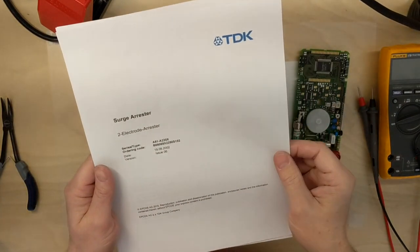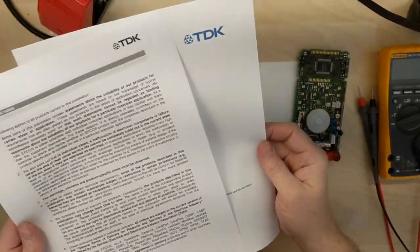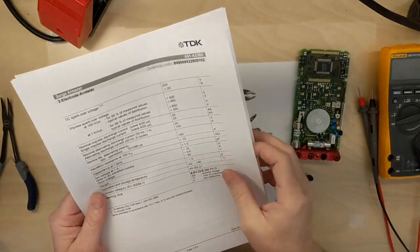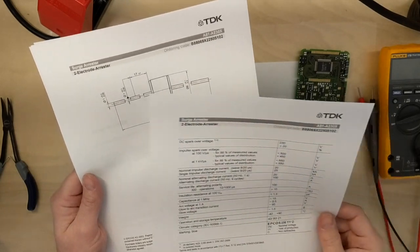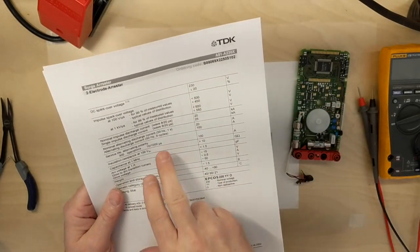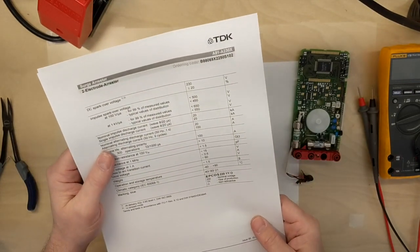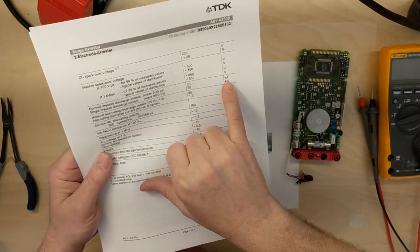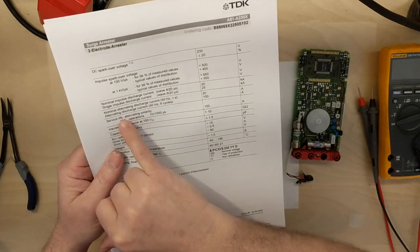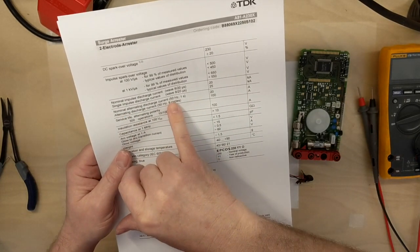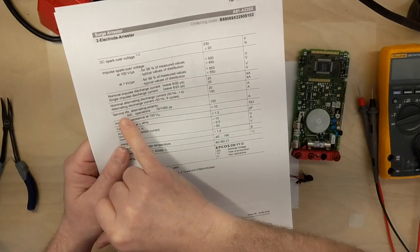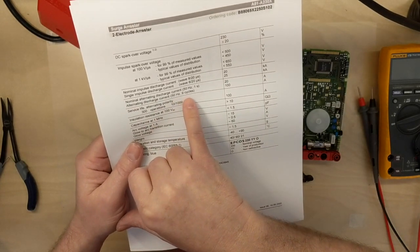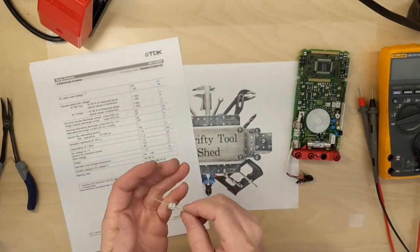I do have a data sheet here and some information on a similar device. This is a TDK on a similar device, not the exact specs of this one, but we can look at how it's got the 230 volt spark over voltage. Nominal input discharge current of 20 kiloamps. Actual nominal alternating current at 50 hertz for one second is 20 amps, and actually on AC discharge at 50 cycles it can actually go nine cycles at 100 amps.